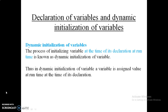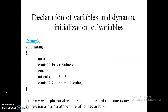Here is an example of dynamic initialization. In the main function, integer a is declared. A message is printed asking the user to enter the value of a, and the cin function stores the user's input into a. Then, the cube variable gets its value dynamically from a: cube = a * a * a. If the user enters 10, the value of cube becomes 1000 and is displayed. This is the example of dynamic initialization at runtime.